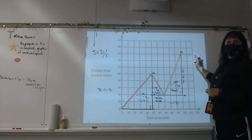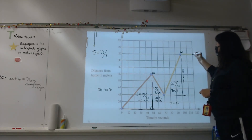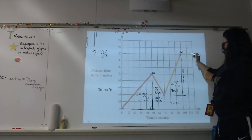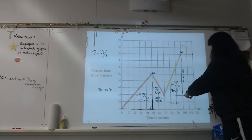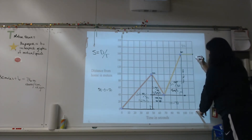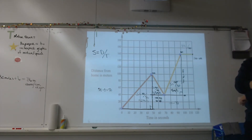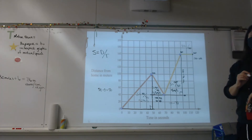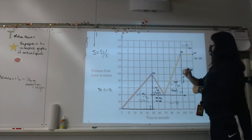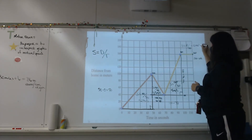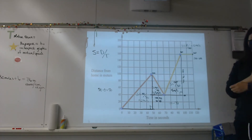Finally we have this chunk where Scott waits for the bus. Notice I can't make a right triangle because it's a flat line, but I can still do the calculation. Time goes from 100 to 120 seconds — 20 seconds pass. But his position stays at 160 meters — it hasn't changed. So my speed is actually zero meters per second: he is not moving at that point.